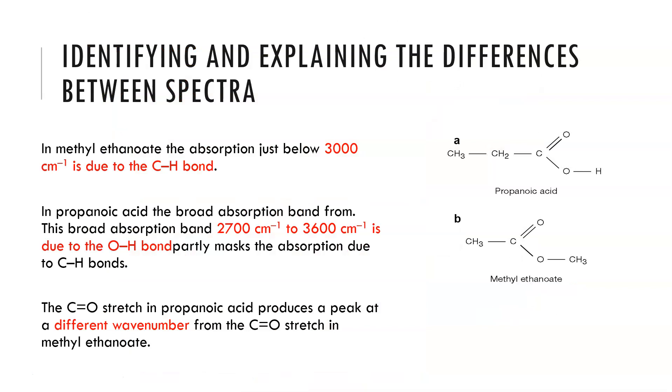When describing this we would say that in methyl ethanoate the absorption just below 3000 cm⁻¹ is due to the CH bond. In propanoic acid the broad absorption band from 2700 to 3600 is due to the OH—please remember to specify OH acid stretch—partly masking the absorption due to CH. The C=O stretch in propanoic acid produces a peak at a different wave number from the C=O in methyl ethanoate, but they are both within the same region of around 1700 to 1750 wave numbers.